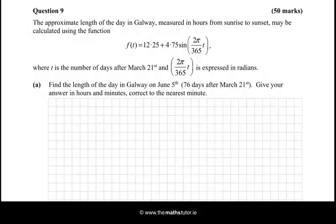In this question we're given a function which describes the approximate length of the day in Galway, measured in hours from sunrise to sunset. This function is a sine function where t is the variable. The function is f(t) = 12.25 + 4.75 sin(2π/365 t), where t is the number of days after March 21st and 2π/365 t is expressed in radians.